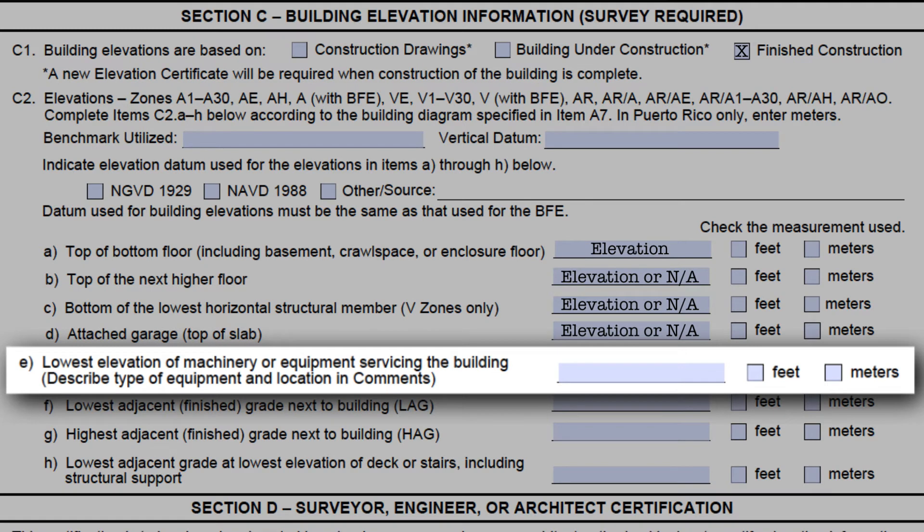Field C2E causes many errors, so let's walk through understanding this one. This field asks for the lowest elevation of the machinery or equipment servicing the building, and the surveyor is to describe the type and location in the section D comments box. Machinery and equipment include furnaces, AC units, hot water heaters, ductwork, sump pumps, heat pumps, generators, and elevators. It does not include water or sewer pipes, electrical lines, water meters, gas meters, electricity meters, public utility transformers, power generators, or other pieces of equipment not owned by the insured. These are not insurable, so no need to identify where they are.